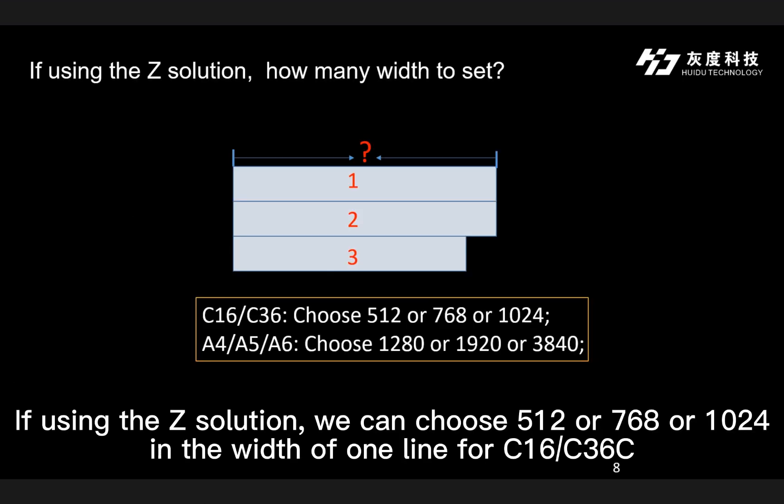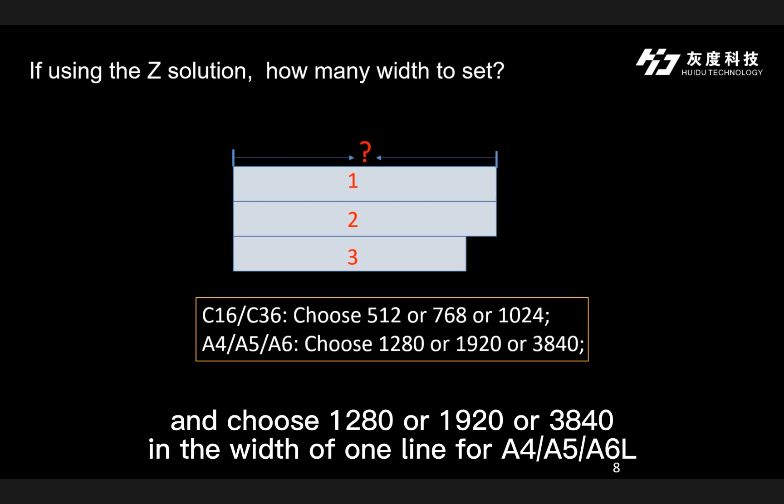One more thing: if using the Z-solution, for C16C and C36C you can choose 512, 768, or 1024 as the width of one line. For A4, A5, and A6L, you can choose 1280, 1920, or 3840 as the width of one line.